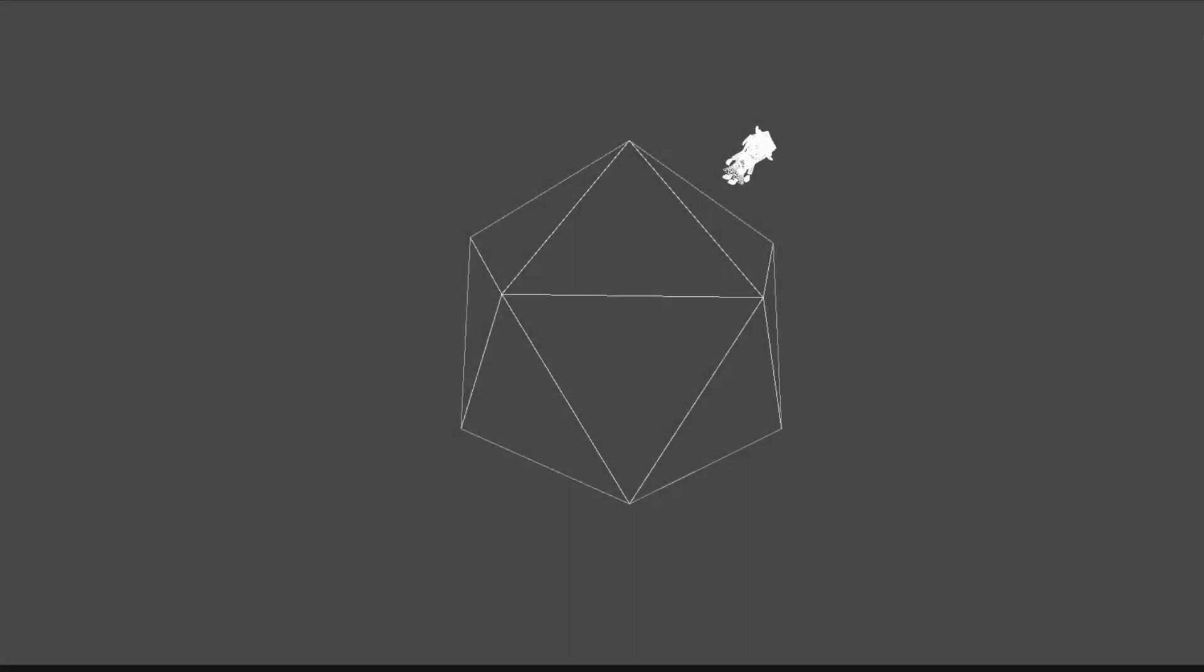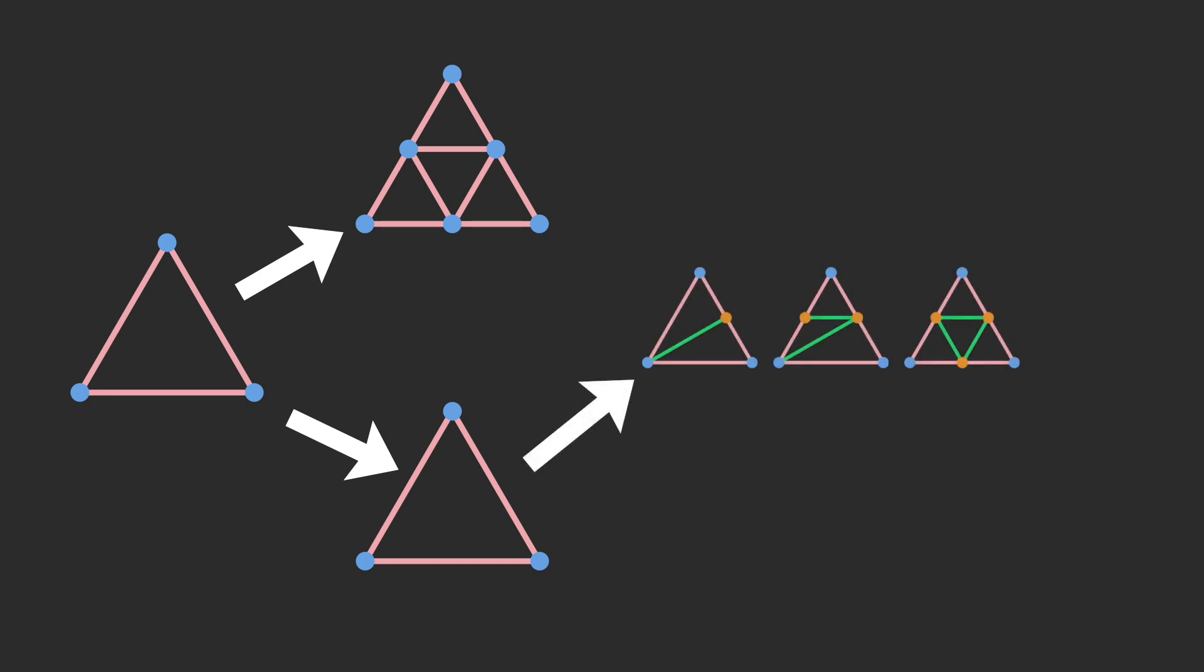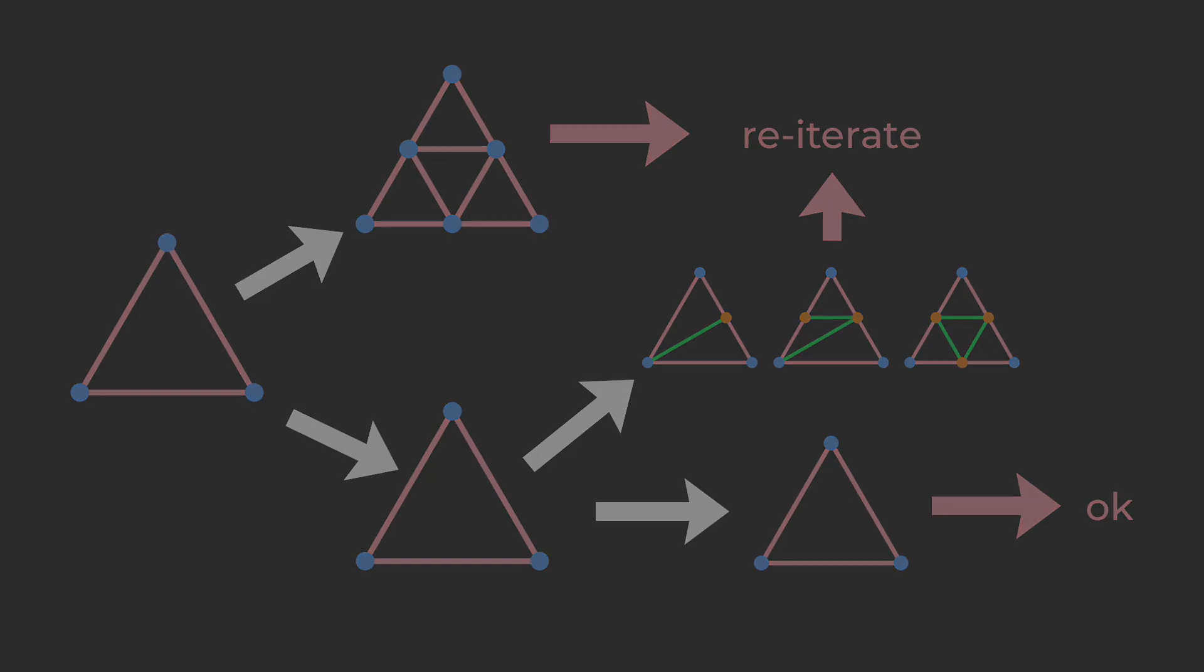We start with an icosahedron with 12 vertices and 20 triangles. We then iterate over all triangles in a three-step process. First, we subdivide those triangles in which a midline point is too far off its supposed position. Second, we adapt those triangles that were not subdivided in the first place, but have a common border with a newly added vertex to ensure the mesh consists only of triangles. And lastly, we consider all triangles as fixed that were not touched in steps 1 or 2.